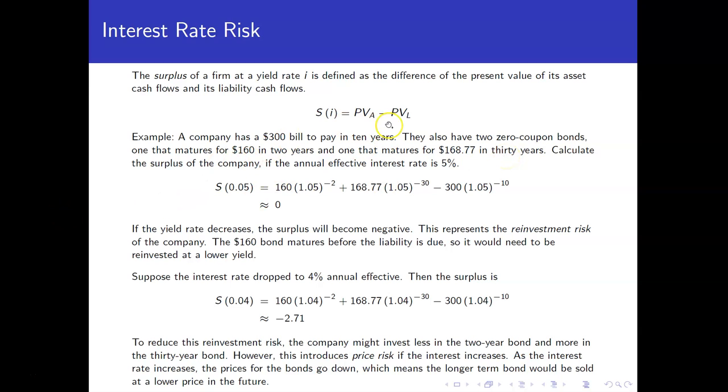Let's calculate the surplus of the company using this definition if the annual effective interest rate is 5%. Now, you might be thinking a little bit about why do we have something maturing in two years and one maturing in 30 years to pay for a bill in 10.